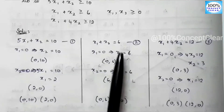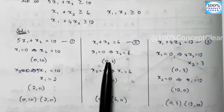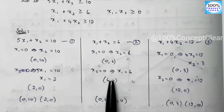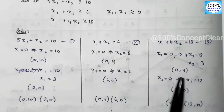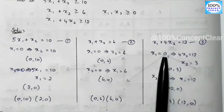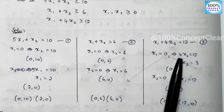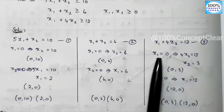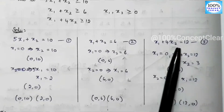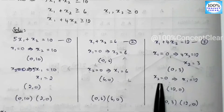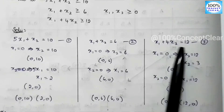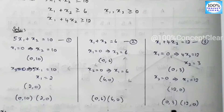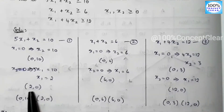For the second constraint, set x1 to 0: x2 equals 6, giving point (0, 6). Set x2 to 0: x1 equals 6, giving point (6, 0). For the third constraint, set x1 to 0: 4x2 equals 12, so 12 divided by 4 equals 3, giving x2 equals 3, point (0, 3). Set x2 to 0: x1 equals 12, giving point (12, 0).